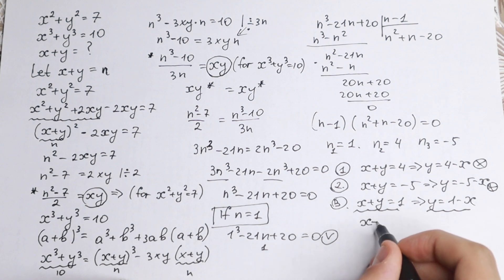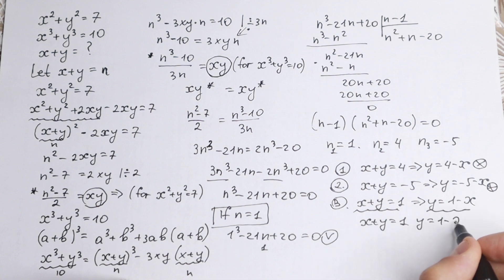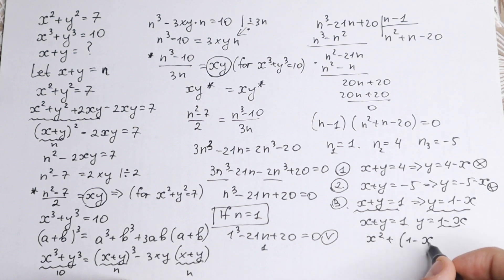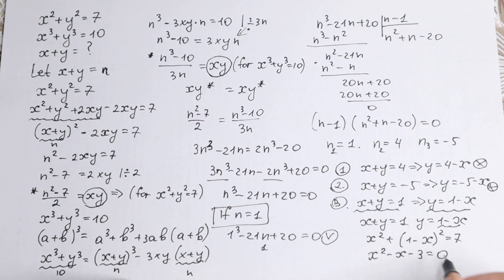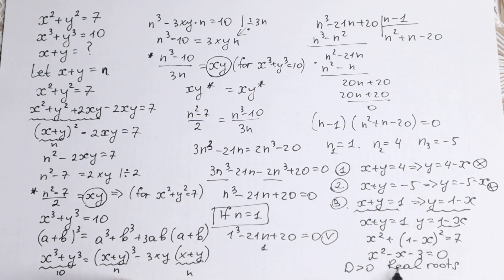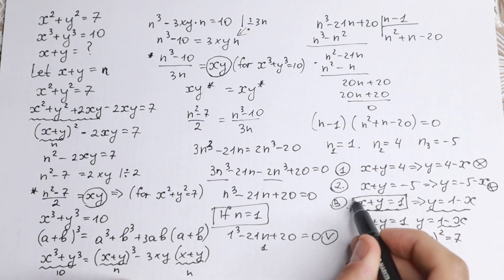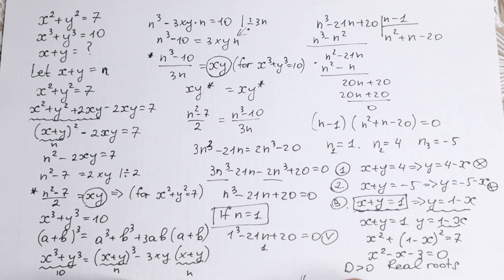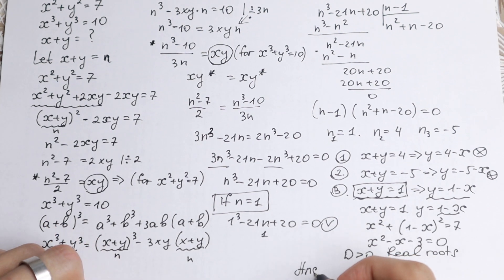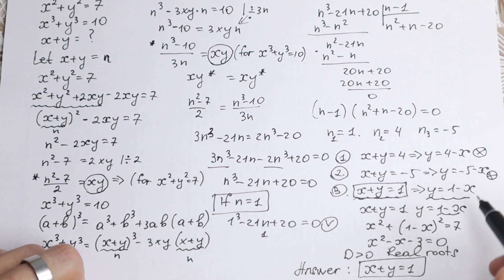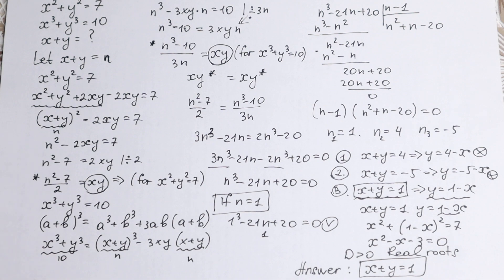Take a look closely: when x plus y equals 1, y equals 1 minus x. Plugging into x squared plus y squared equals 7 gives x squared plus (1 minus x) squared equals 7, which leads to x squared minus x minus 3 equals zero. The discriminant of this quadratic is positive, so we get real roots — this is the one and only valid case. Therefore, the answer is x plus y equals 1.